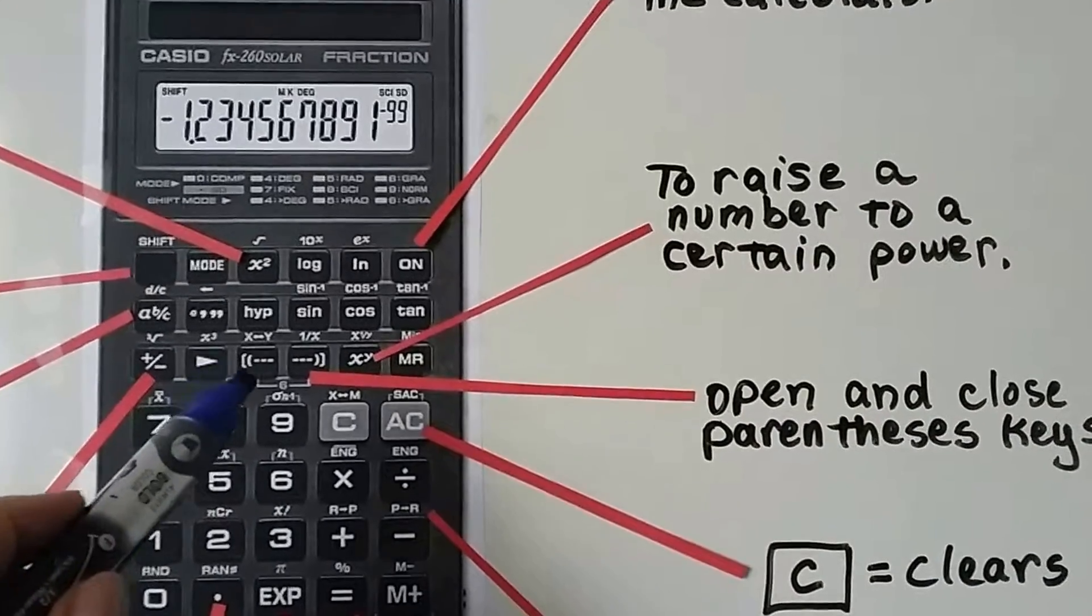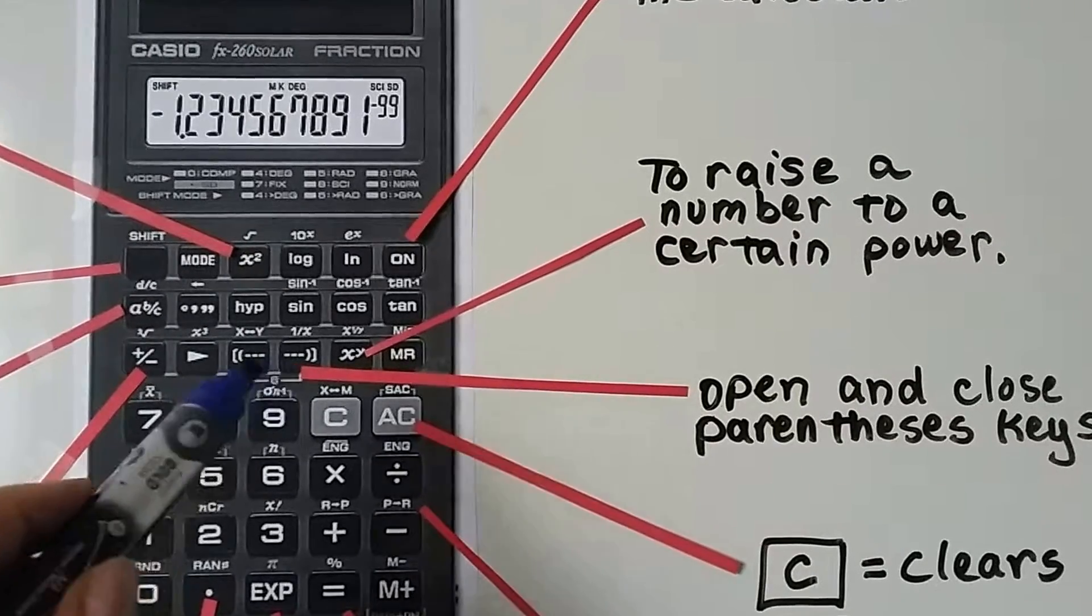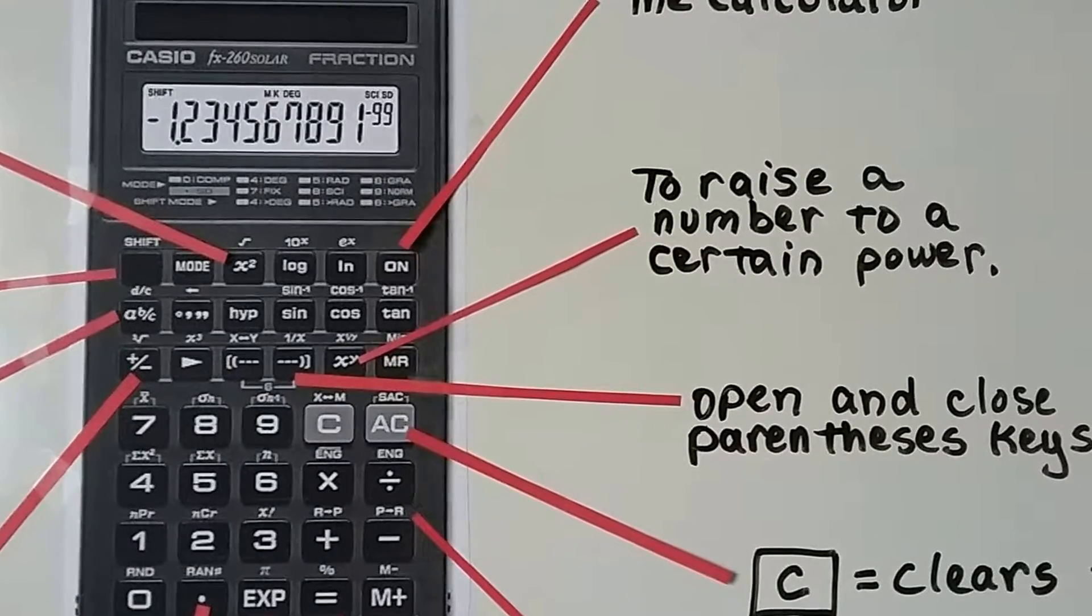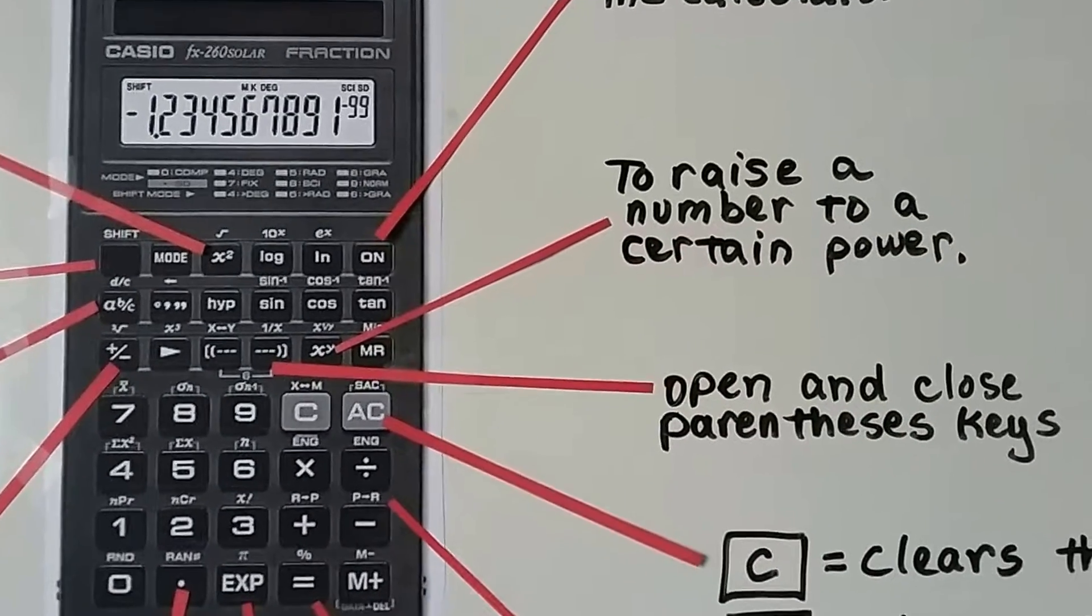Here we have a closed parentheses and an open parentheses right here. Those are the parentheses keys in case you need them, which you might.